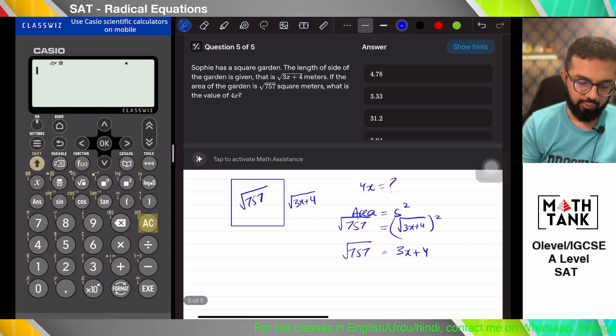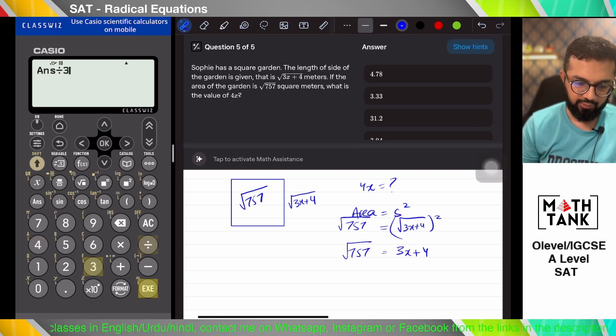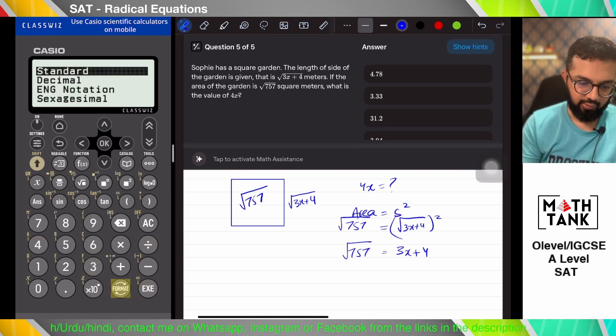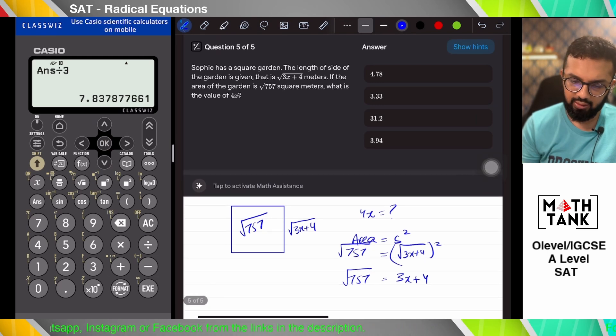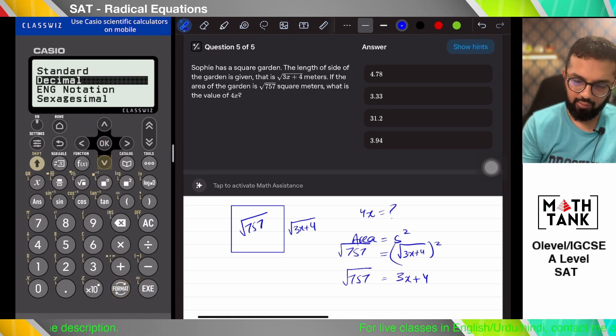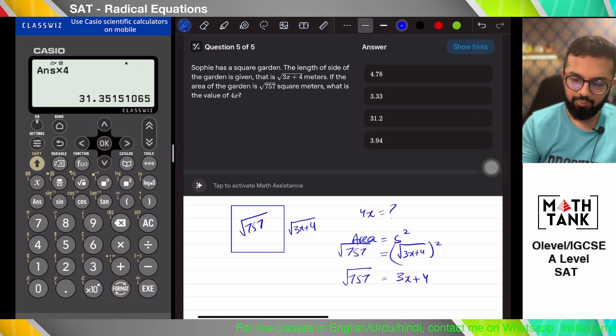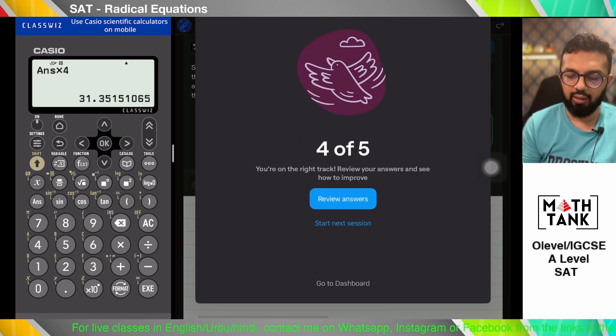Okay, then root of 77 minus 4 divided by 3. Change the format. 7.83 multiplied by 4. 31.2.